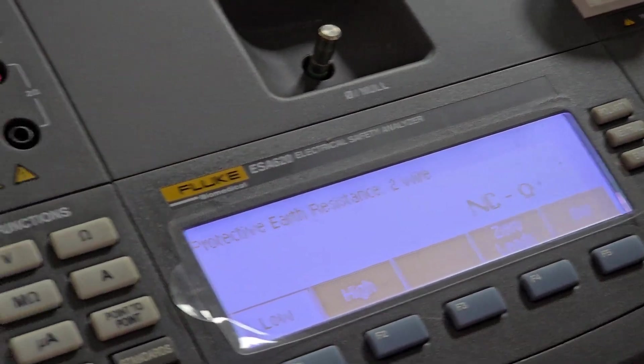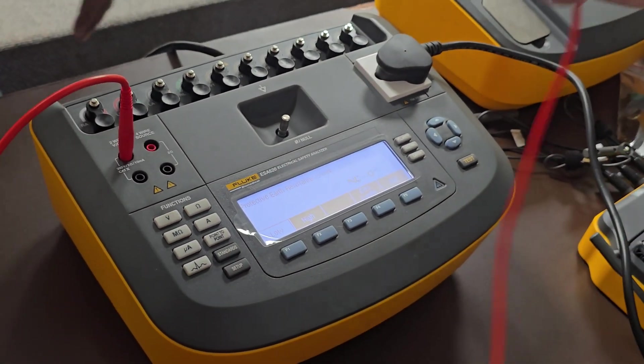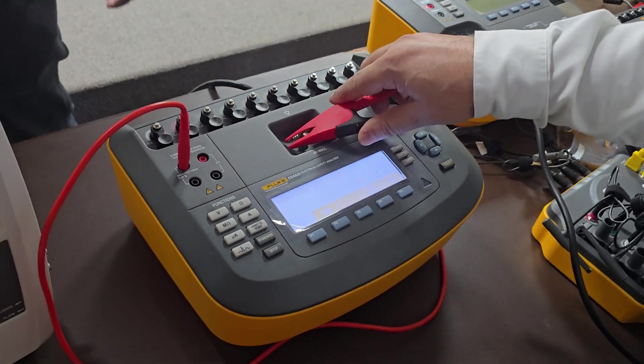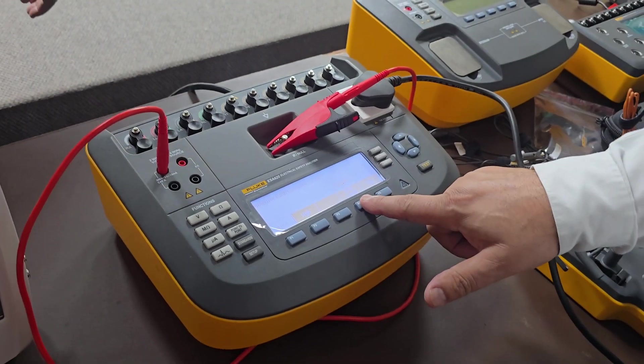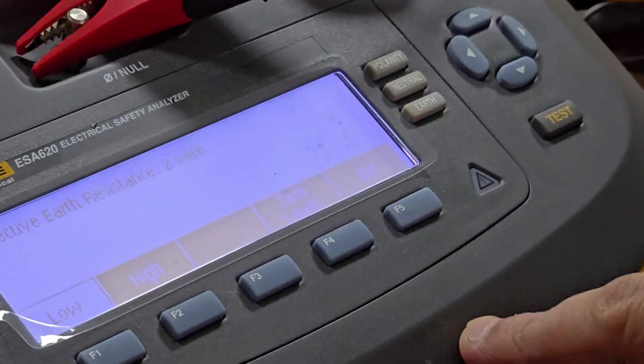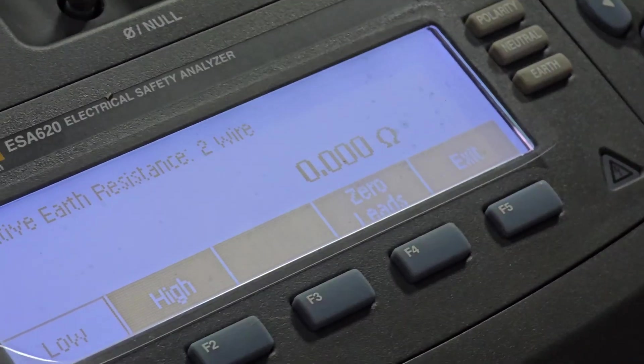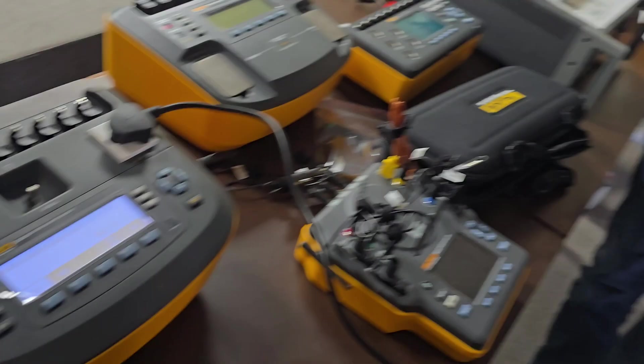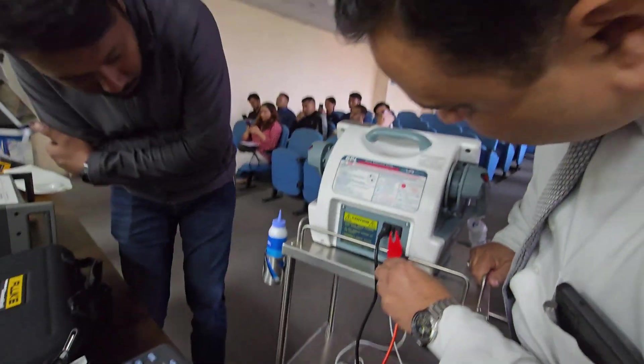So you can start. So this also has resistance to nullify this. So we do it like this. Then we make the zero leads. Then we take it to earth potential here, this one here. Where is that?